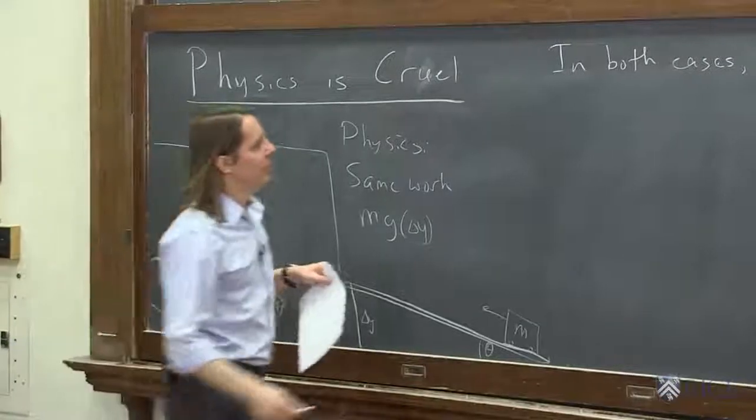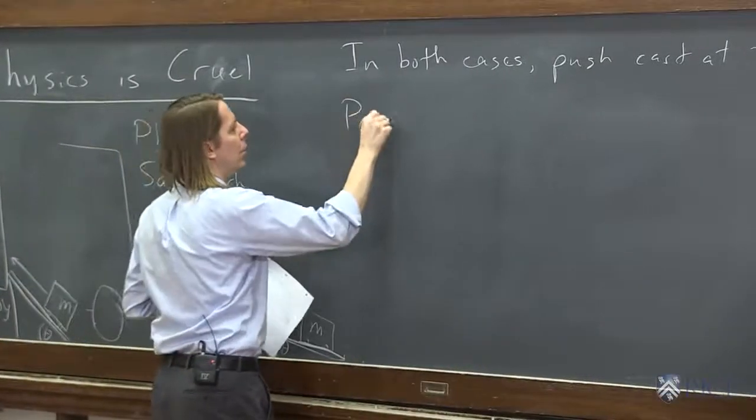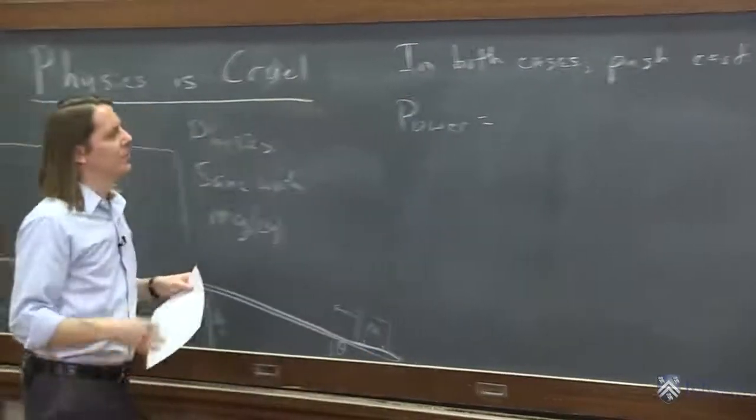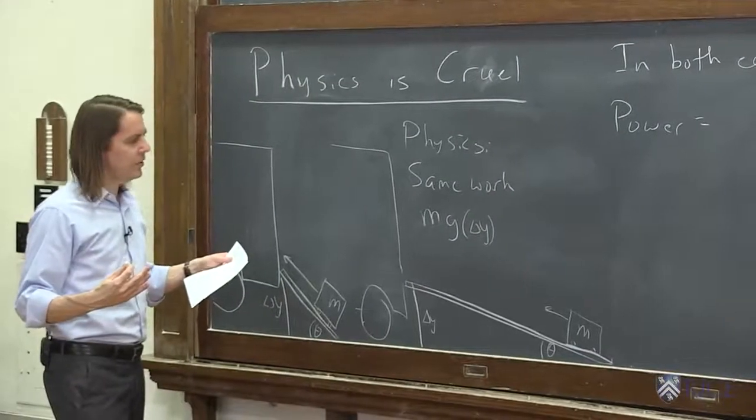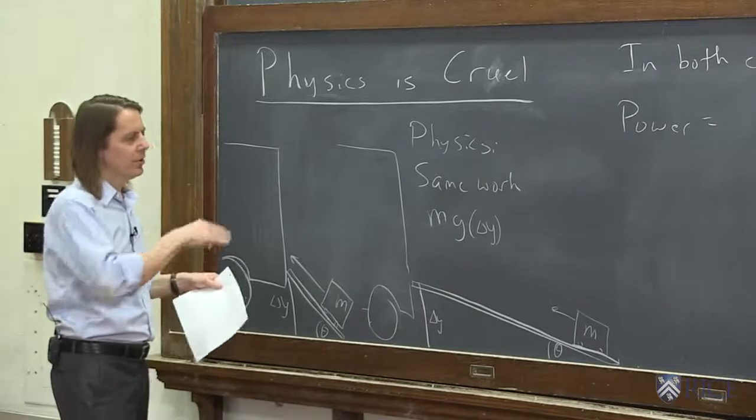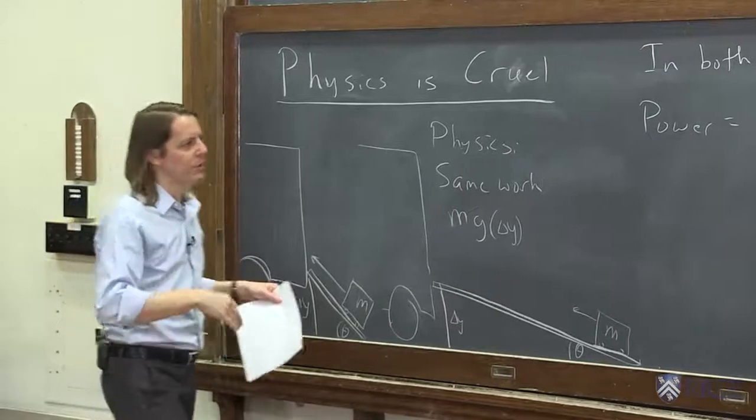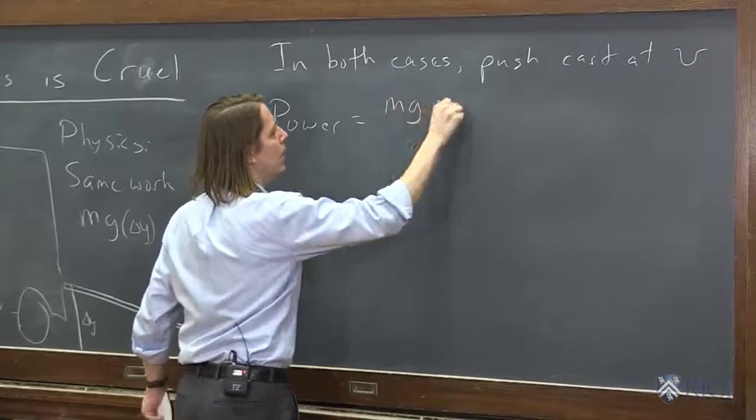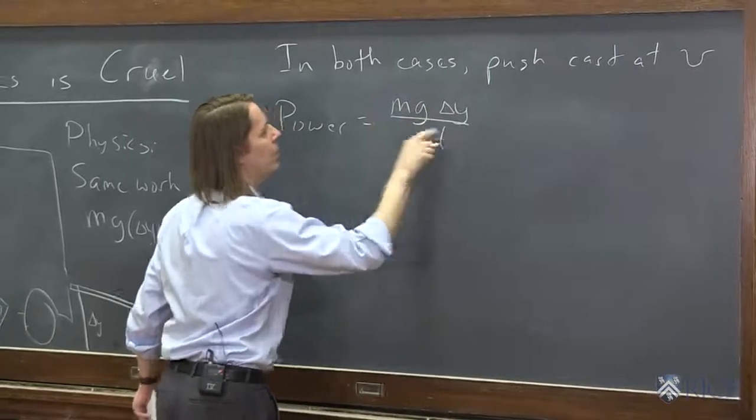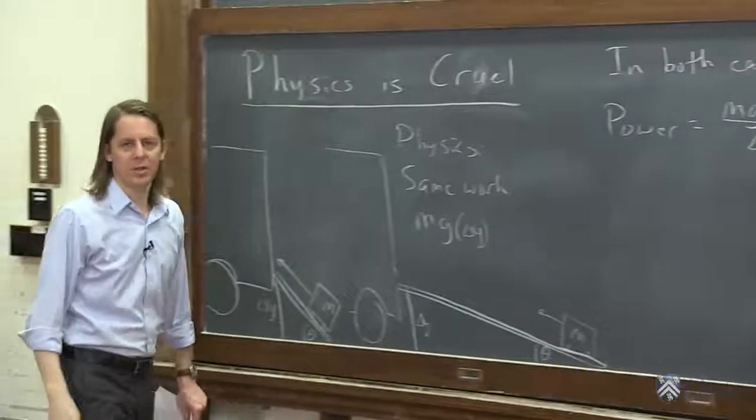And we're going to say, well, what is the power? It's the amount of work you do. It's the change in work, delta w, change in work, over delta t. So it's this mg delta y over delta t. Just what physics said we did, mg delta y.